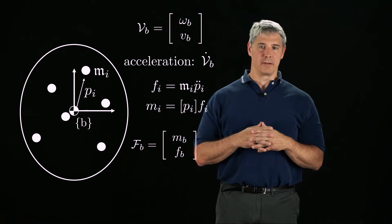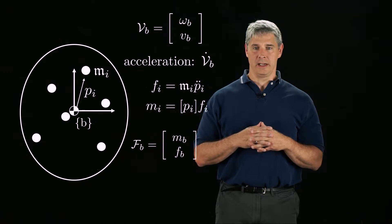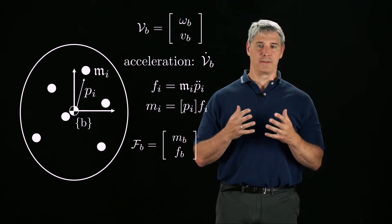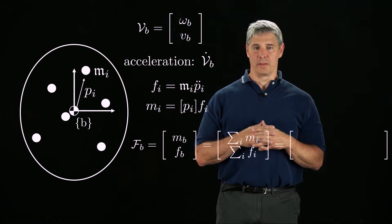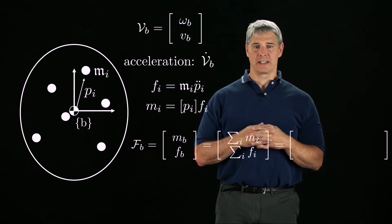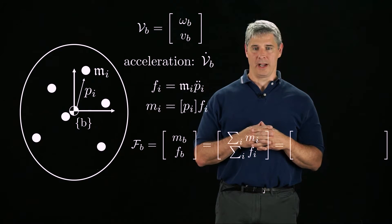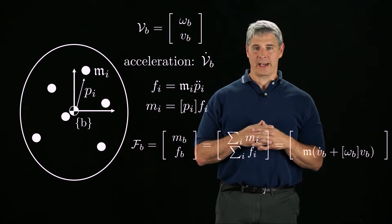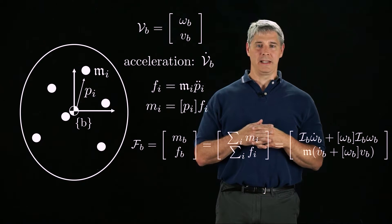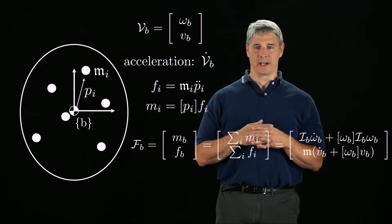The total wrench fb, consisting of a moment mb and a force fb, needed to accelerate the body with acceleration vb-dot when it is moving with a twist vb, is just the sum of forces and moments needed for the individual point masses. If we define m to be the total mass of the body, then using the fact that we define the frame b to be at the center of mass, the total force fb is just m times vb-dot plus bracket omega-b times vb.